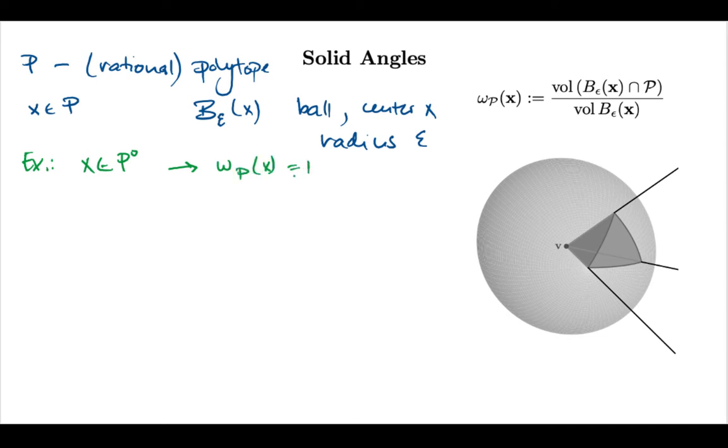This is sort of one extreme and the other extreme is if x is not in the polytope then my ball will not intersect P again if ε is small enough and so that means we're measuring an angle of zero. And so again the interesting part is sort of in between.